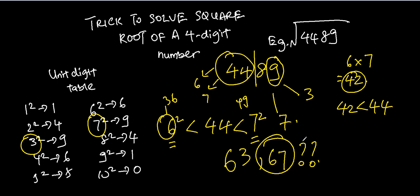This trick uses the idea of completing the squares. To recap: step one, split the four-digit number into the first two digits and the last two digits. Step two, compare the last digit with the unique-digit table to find the last digit of the answer — either 3 or 7. Step three, determine which two consecutive squares the first two digits fall between, and the first digit of the answer is always the smaller one — in this case, 6. Step four, multiply those two single digits together: if the product is smaller than the first two-digit number, take the bigger option; if greater, take the smaller option.